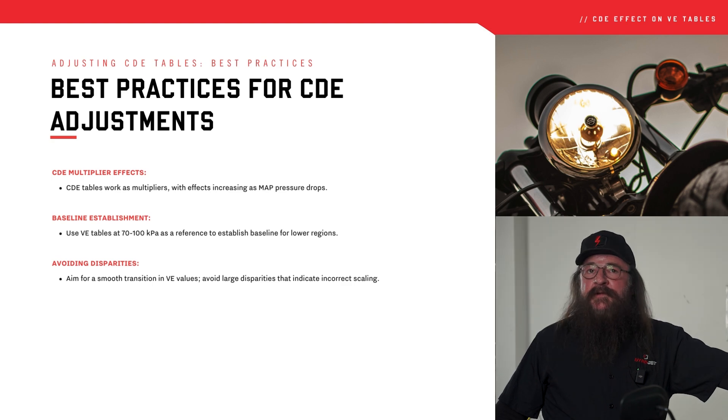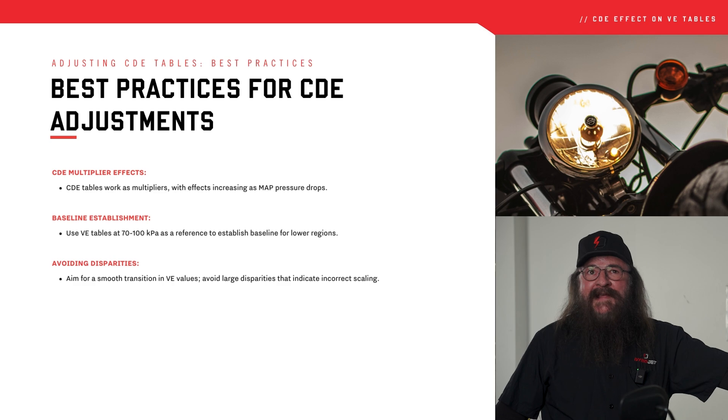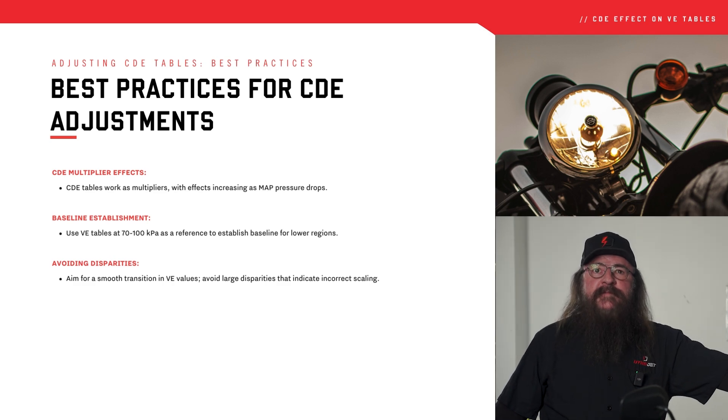A good practice is to use your upper regions of the VE tables as a guide — the 70 to 100 kPa range. The goal is to avoid large disparities in the VE values. You don't want to see a table that has a 115 sitting beside a 70 — that's an example of a terrible VE table. Nothing runs that way.